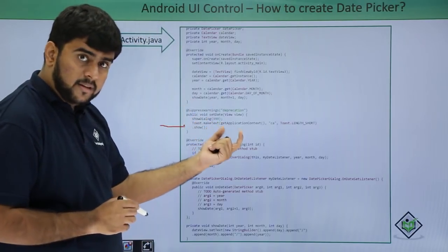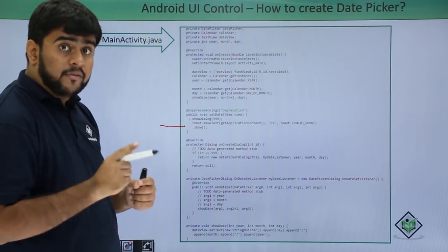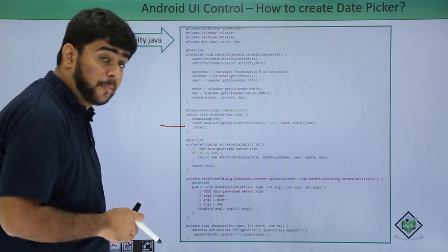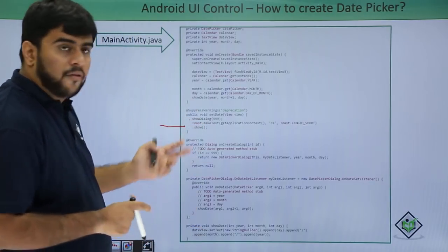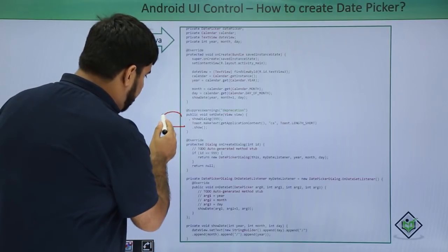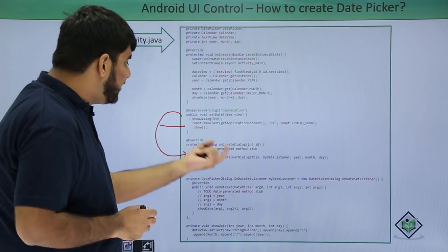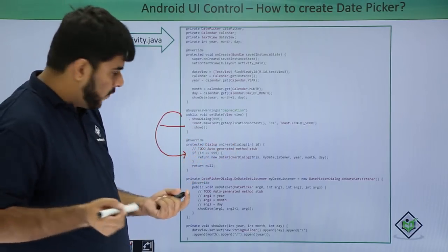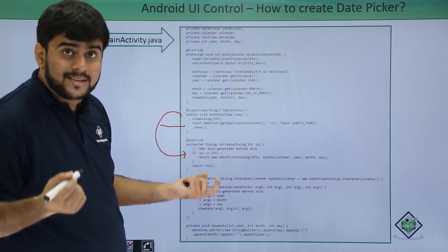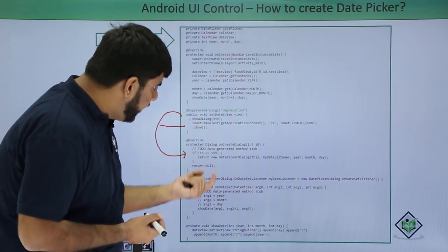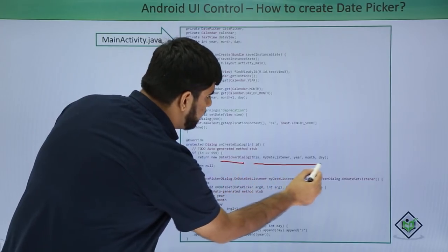From the setDate method we call showDialog with a particular ID — in this case, 999. Whenever we call showDialog, the method that follows it immediately is onCreateDialog. In this method we check if the ID passed to showDialog matches 999, and if so, we return a date picker dialog.